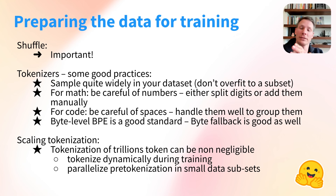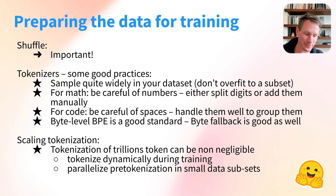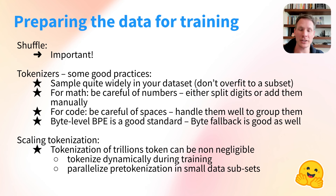Now that we've finished sourcing, language filtering, quality filtering (heuristic or ML), deduplication, and topic filtering, we need to prepare the data for training. There are two main things: shuffle it — it might seem like a joke but it's still very important; you don't want to train in the order of the Common Crawl dumps, you want good shuffling — and then tokenize it. Recently there was a very nice video by Andrej Karpathy on tokenizers; you should watch it if you want to know everything about tokenizers. Generally there's just a set of good practices you should be mindful of.